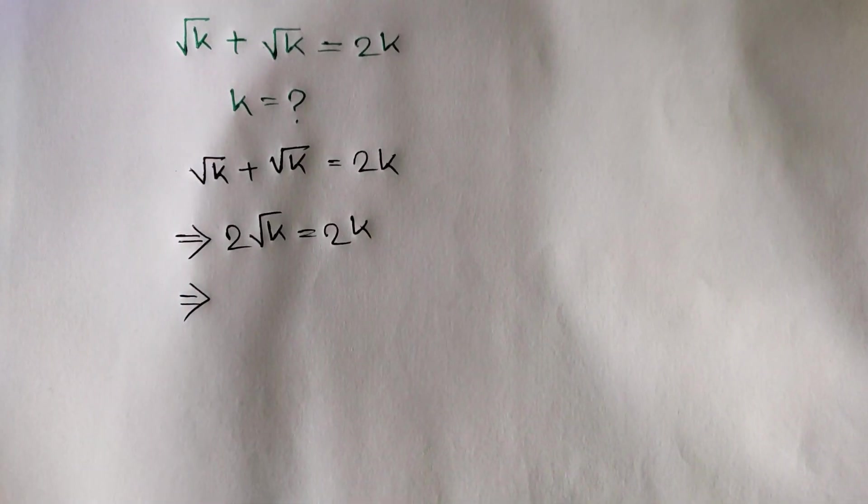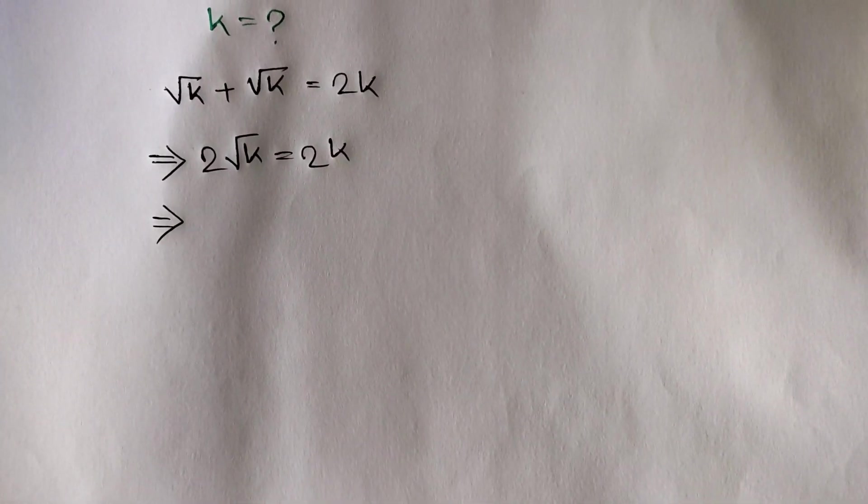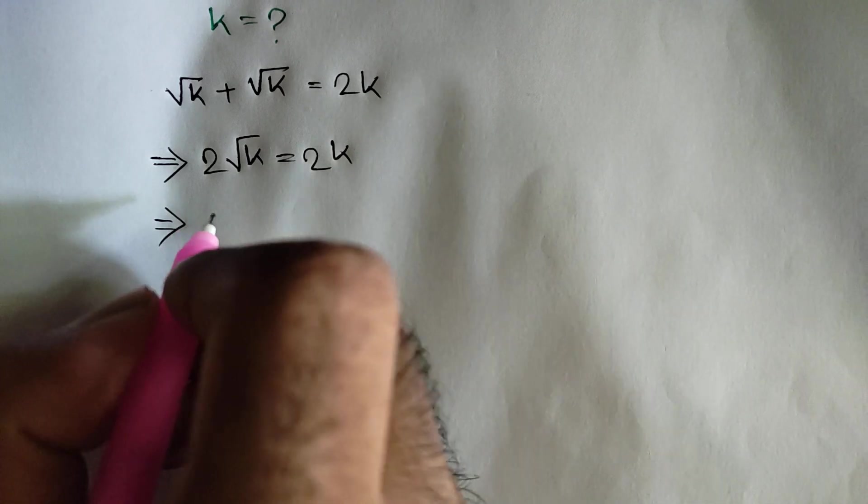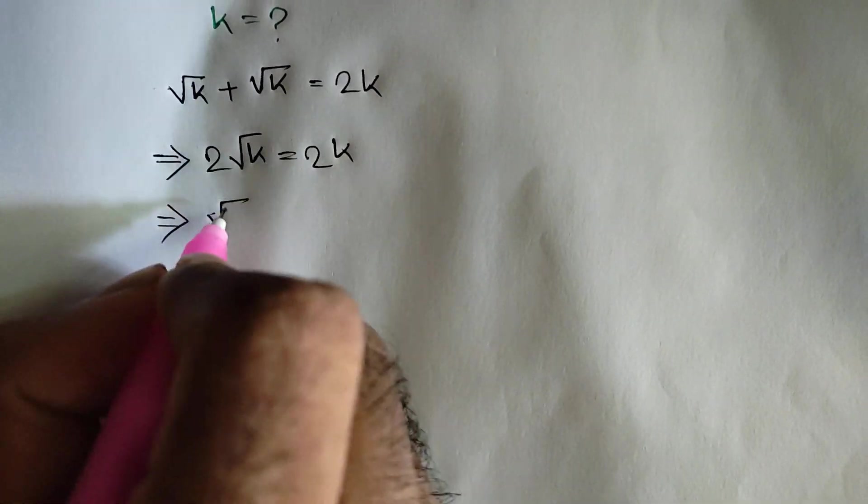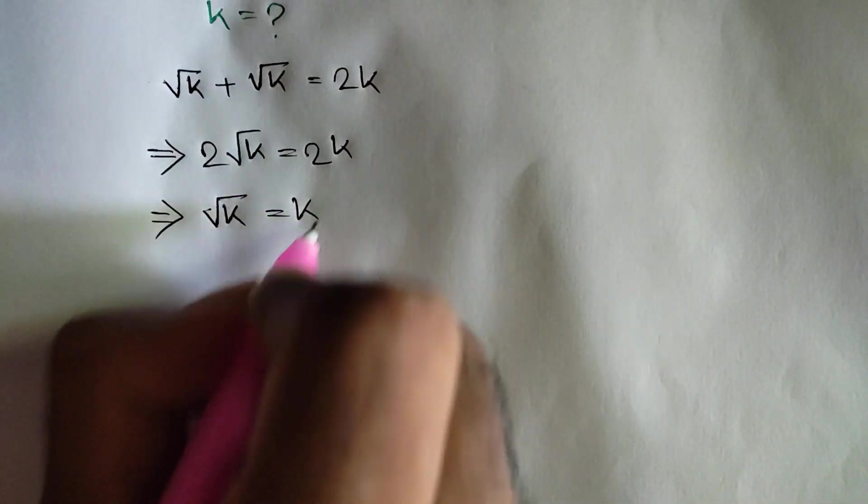Now dividing both sides by 2, we will get square root of k is equal to k.